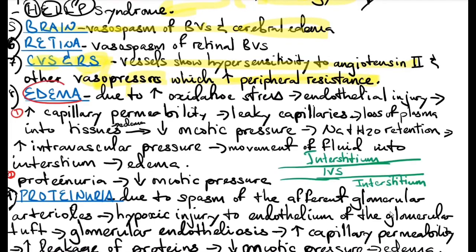How does edema occur? There is increased oxidative stress on the endothelial cell, resulting in endothelial cell injury, loss of integrity, and increased capillary permeability. Plasma starts coming out of the intravascular system into the interstitial cells. Once this occurs, there is reduced oncotic pressure in the intravascular system, so the body retains sodium and water to restore intravascular pressure. However, the intravascular pressure may rise even higher, causing fluid to move again into the interstitium, resulting in edema.